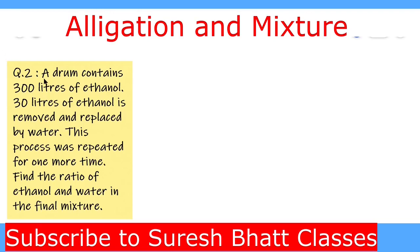The next question: a drum contains 300 liters of ethanol. 30 liters of ethanol is removed and replaced by water. This process is repeated one more time. Find the ratio of ethanol to water in the final mixture. We will solve it by the conventional method and then by the formula method.